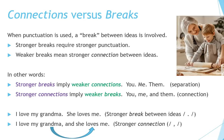Can you see the separation here between these items? Stronger connections imply weaker breaks. For example: you, me, and them. Can you see the connection between these items? I love my grandma. She loves me. There's a stronger break between these ideas, as indicated by the period. I love my grandma and she loves me — there's a stronger connection, as indicated by the comma.